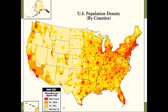Individuals in a population often exhibit characteristic patterns of dispersion, defined as spacing relative to one another. There are three differing types of dispersion. I'll leave population density, which we have just completed, with a map of the United States population density.